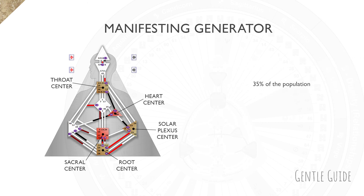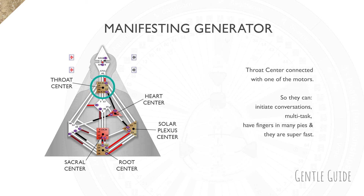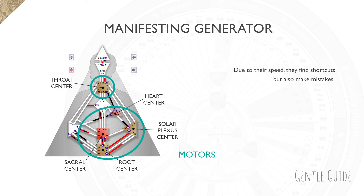The same as Generators, Manifesting Generators represent roughly around 35% of the population. They have a throat connection with one of the motors, which means they can initiate conversation, multitask, have fingers in many pies, and they're super fast.